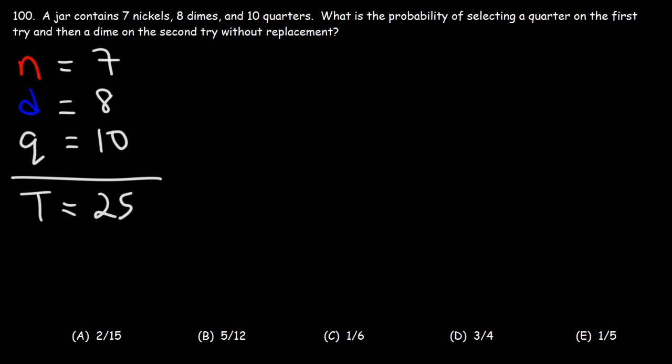Here we're looking at two events. Let's focus on the first event: what is the probability of selecting a quarter on the first try? The probability of selecting a quarter is going to be the 10 quarters divided by the total number of coins in the jar, which is 25.